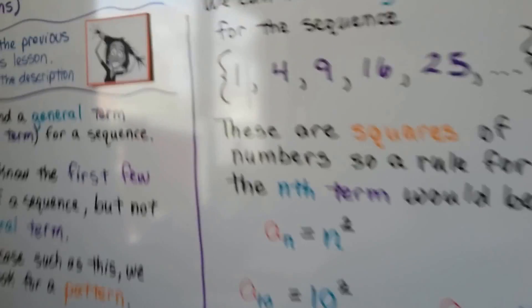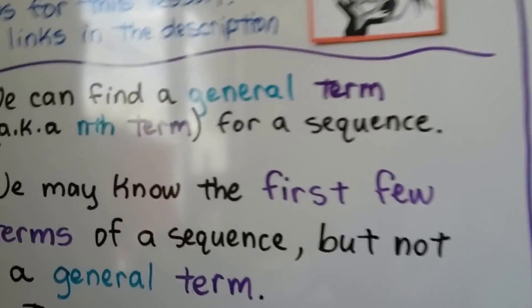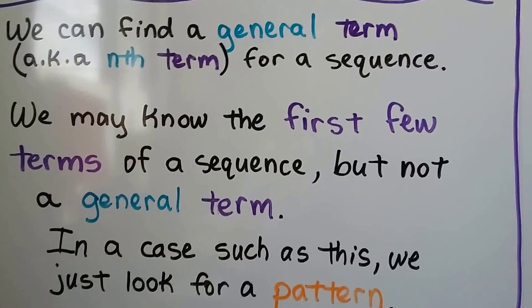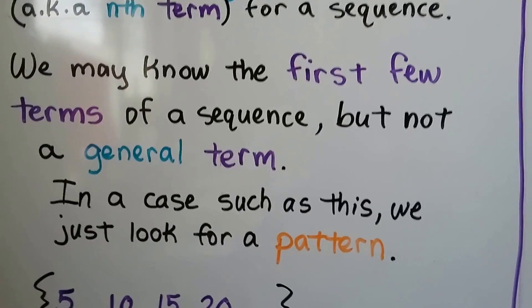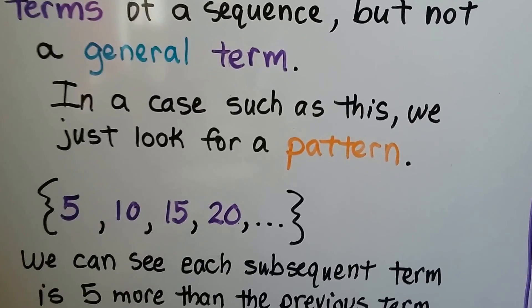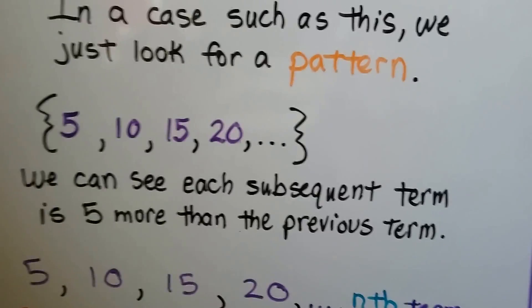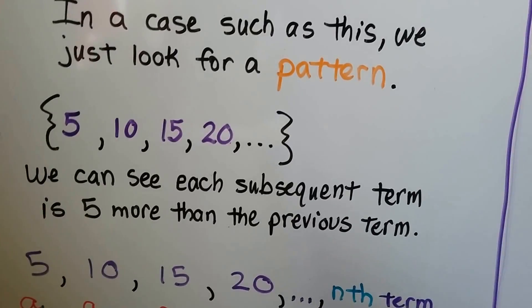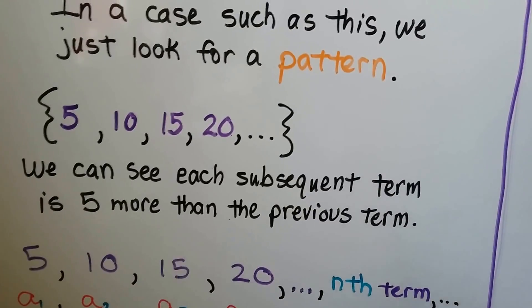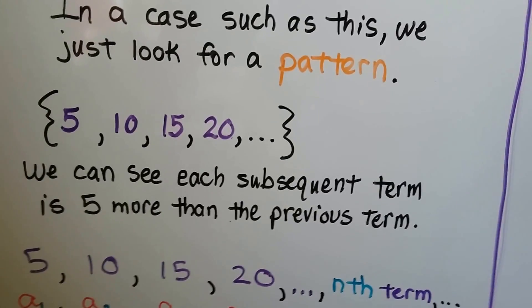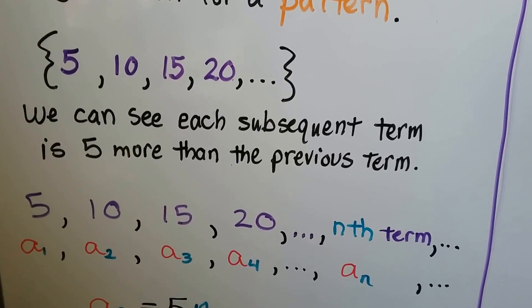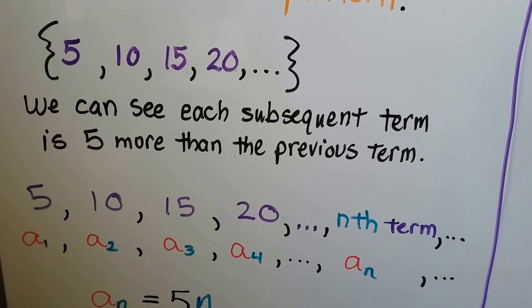So we can find a general term, also known as the nth term, for a sequence. We may know the first few terms of a sequence but not a general term — an nth term. In a case such as this, we just look for a pattern. Notice that our sequence is in set braces — that would be the sequence notation of how we write those numbers.